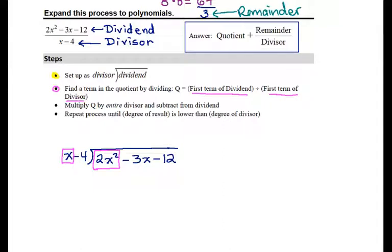So, that is going to look like this: 2x squared divided by x, which I'm going to put right here. I can see that the x squared over x would leave me just one factor of x. And so, in my quotient, I'm going to put 2x.